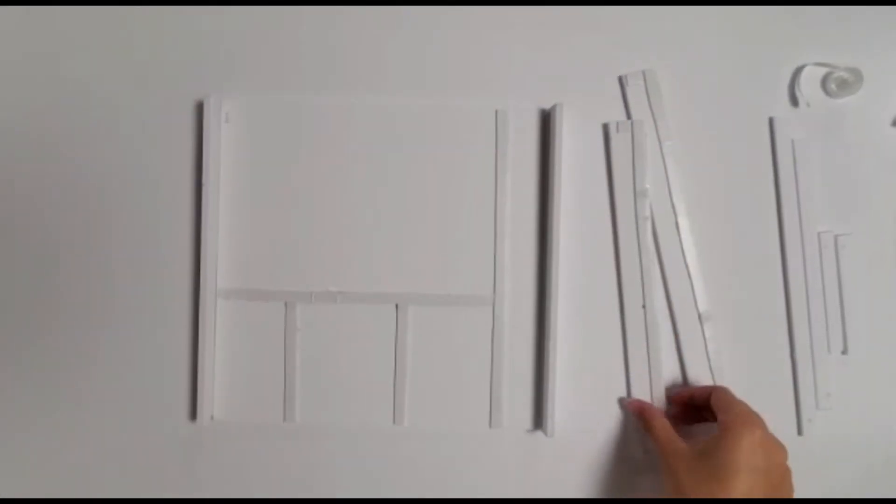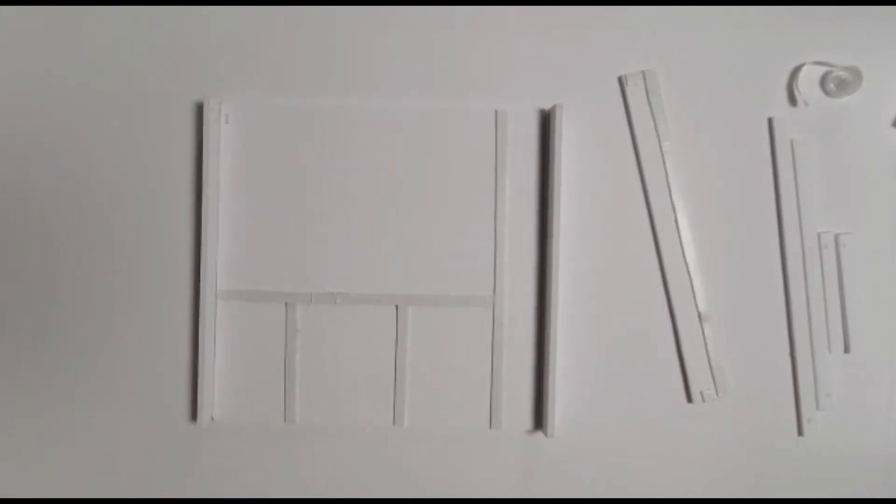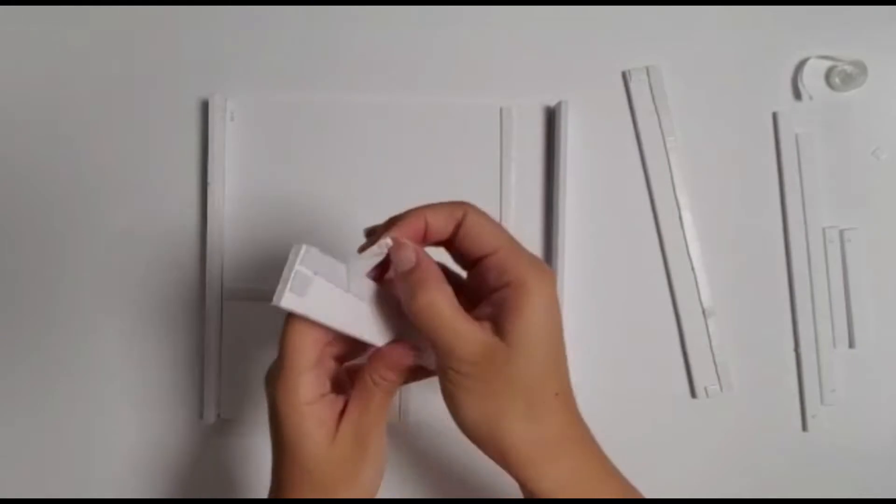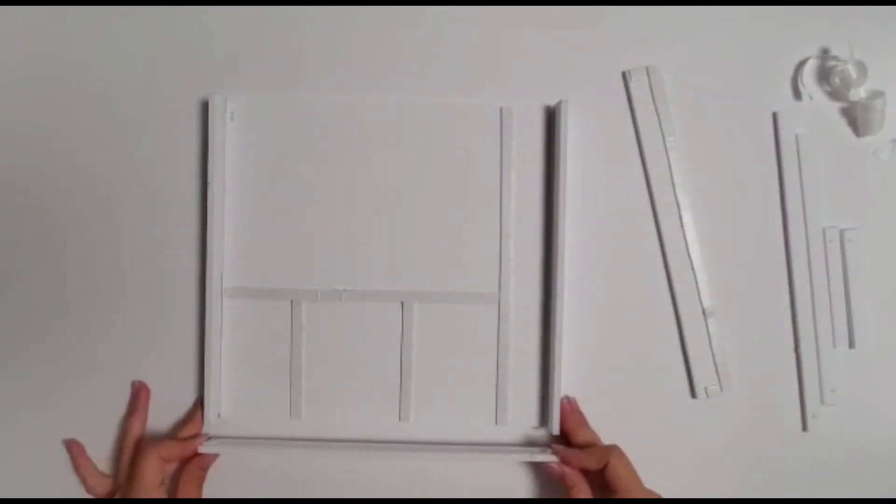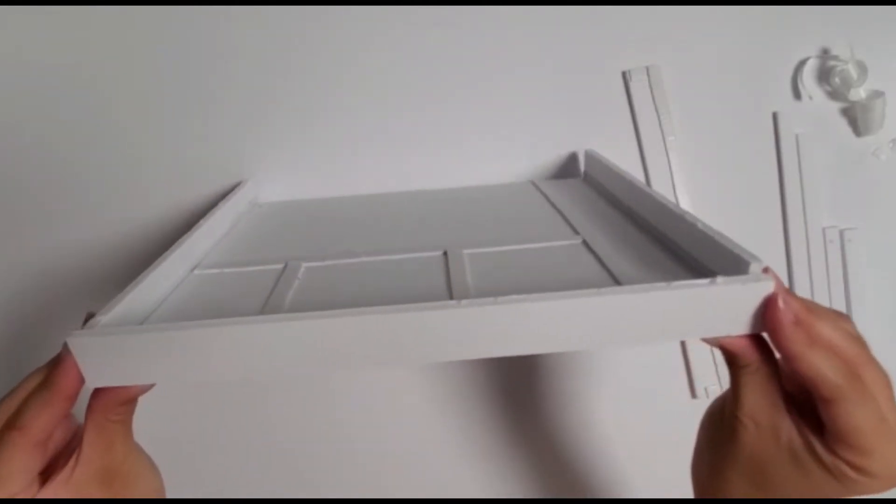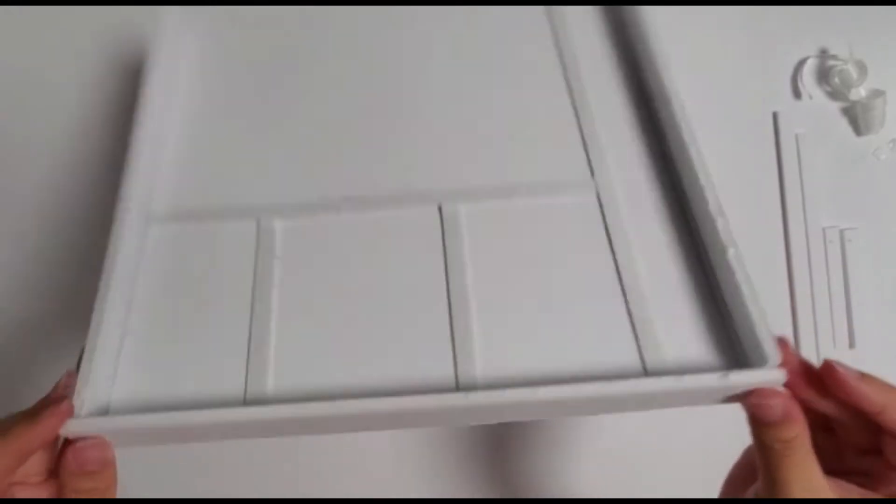Next, take the two B pieces and peel the backing off the tapes. Line up the long piece of tape with an uncovered side of the A piece, and the short pieces of tape with the sides of the C pieces from earlier.